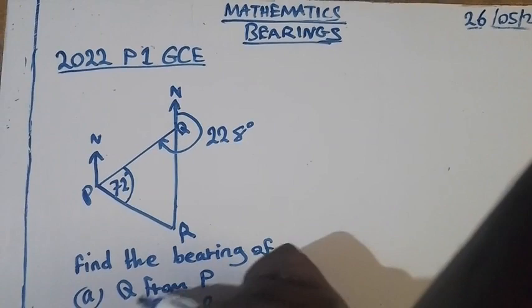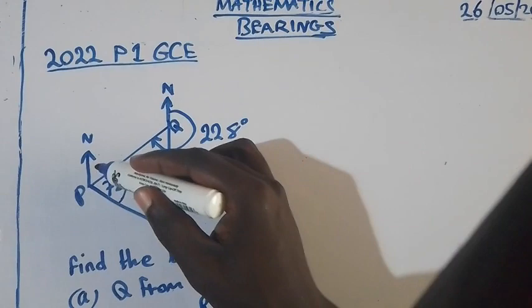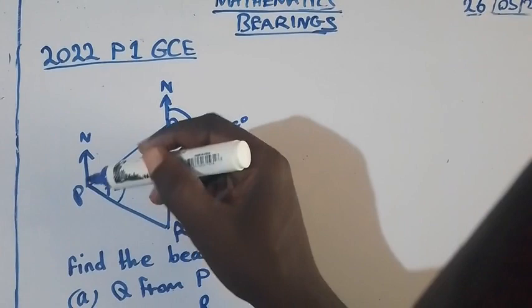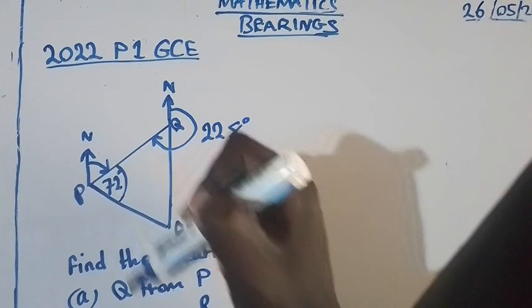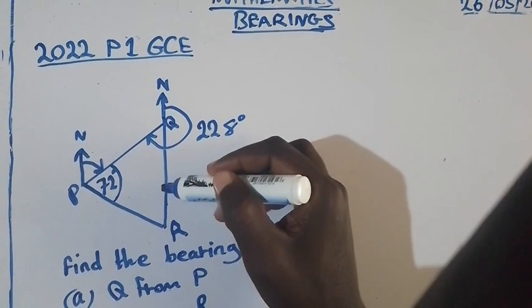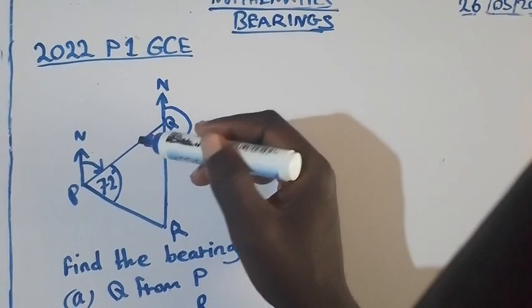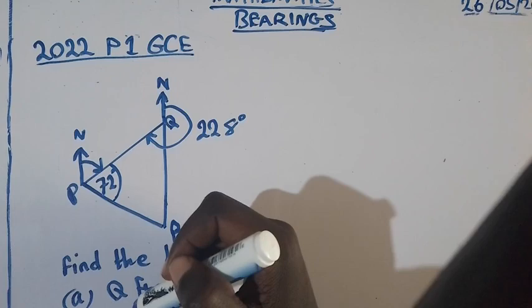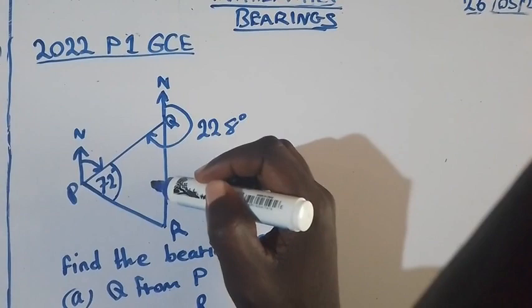So to answer the bearing of Q from P, we have to draw a north pole at point P. Now it's already there. So we are going to rotate until we meet line Q there. So this is the bearing we are looking for. Now to find this bearing, it is making Z angle within this angle which is here. So we are going to apply the concept of alternate angles. So let's find this angle which will help us to know that angle.